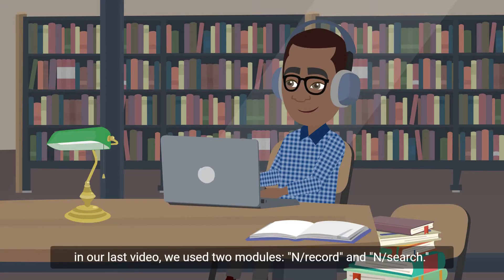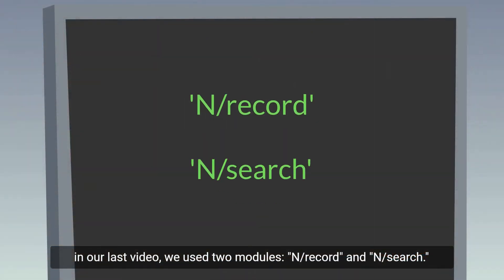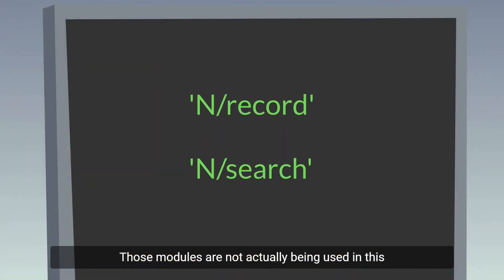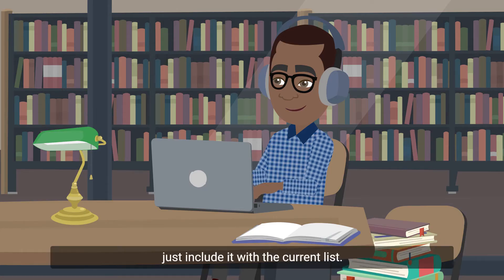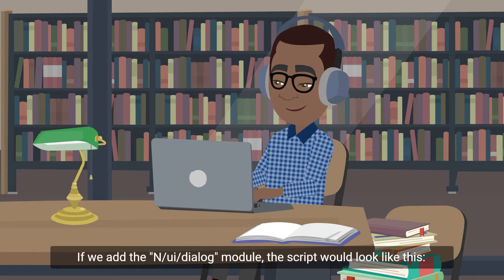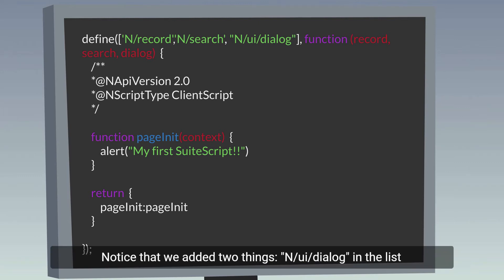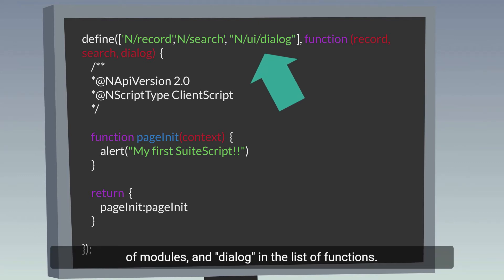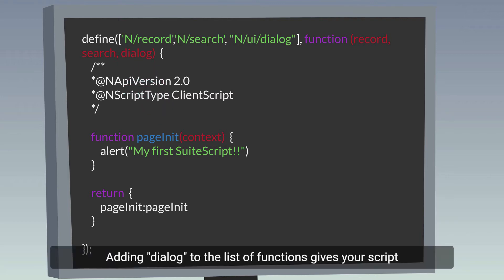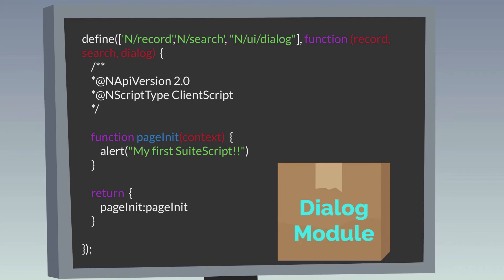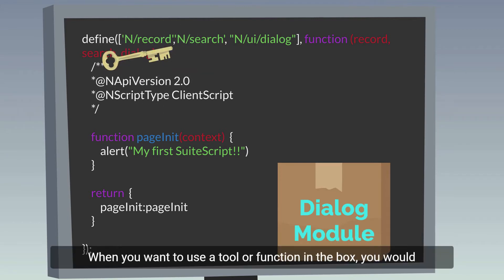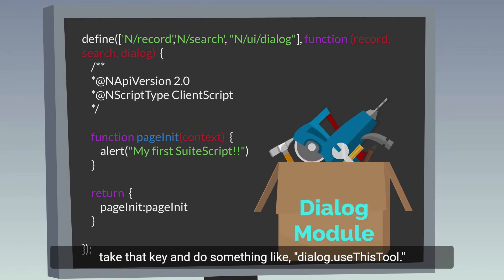In the script where we left off in our last video, we used two modules: nRecord and nSearch. Those modules are not actually being used in this script, but we'll use them in future videos. To add a module, just include it with the current list. If we add the nUIDialog module, the script would look like this. Notice that we added two things: nUIDialog in the list of modules and dialog in the list of functions. Adding dialog to the list of functions gives your script access to the dialog box of tools. It's like the key to the box. When you want to use a tool or function in the box, you would do something like dialog.useThisTool.